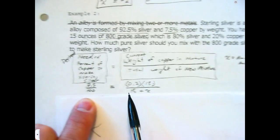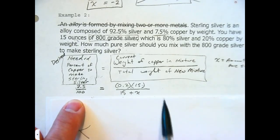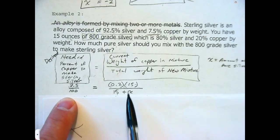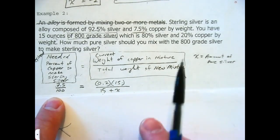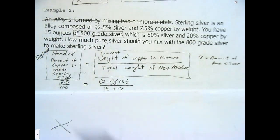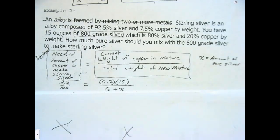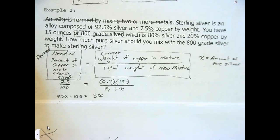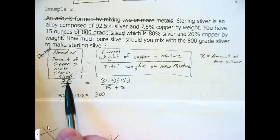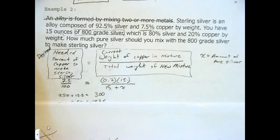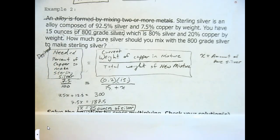We want the copper ratio to be 7.5 out of 100 to make sterling silver — it's currently 3. You need the same denominators: 100 represents the total in sterling silver, and our current weight is 15. Our new weight needs to include x, which is the pure silver you're mixing in. So the total weight of the new mixture is going to be 15 + x. You're adding in some pure silver — that's what x equals.